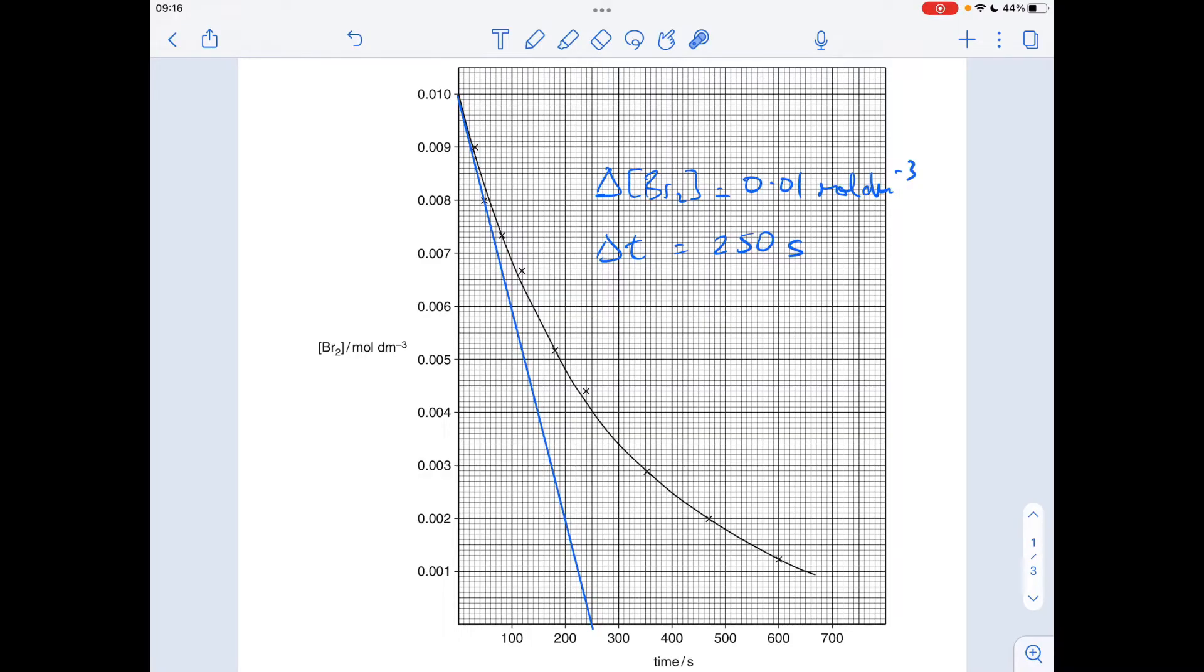There's a bit of variation going to be allowed here because obviously tangents can change ever so slightly. So anyway, this is how I would draw it. So I've got a change in the bromine concentration, obviously it's starting at zero and going up to that, so my change in bromine concentration is 0.01, and my tangent's cutting that time axis there at 250, so that's my change in time.